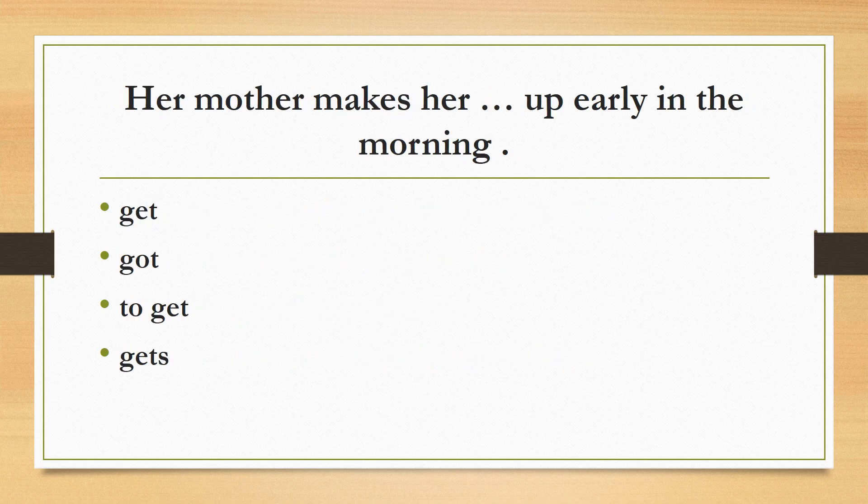Her mother makes her up early in the morning, get, got, to get, gets. The correct answer is 'get'. In verb pattern, subject plus make plus agent, we always use verb 1. According to the options, verb 1 is 'get'. That's why the correct answer is: Her mother makes her get up early in the morning.